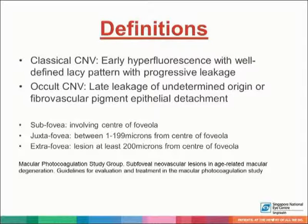For definitions, the classical CNV is defined as early hyperfluorescence with a well-defined lacy pattern with progressive leakage at the late stage. Occult CNV is a late leakage of undetermined origin or fibrovascular pigment epithelial detachment. Definitions of location: subfoveal is involving the center of the foveola; juxtafoveal lesions are located between 1 to 199 microns from the center of the foveola; extrafoveal lesions are at least 200 microns from the center of the foveola. This is based on the definition from the Macular Photocoagulation Study Group.